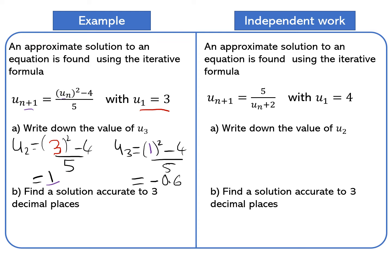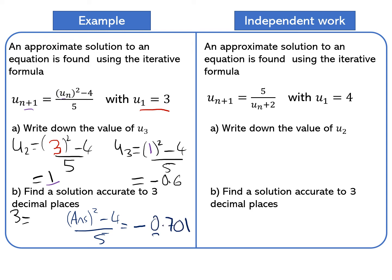Find a solution accurate to 3 decimal places. Press 3 equals into the calculator. Now type in ANS squared minus 4 divided by 5, using the ANS key. Keep pressing equals until the calculator display stays the same. We get minus 0.701 to 3 decimal places.